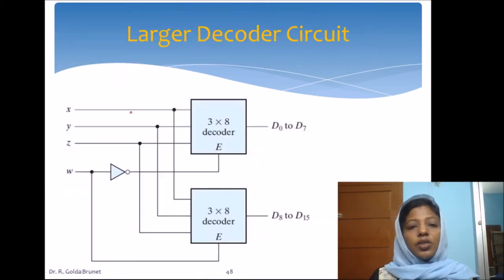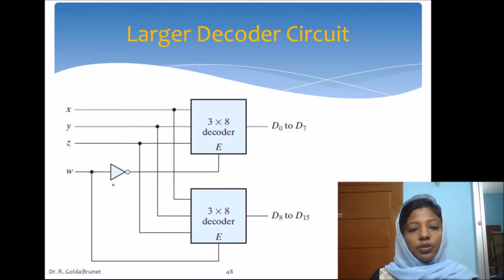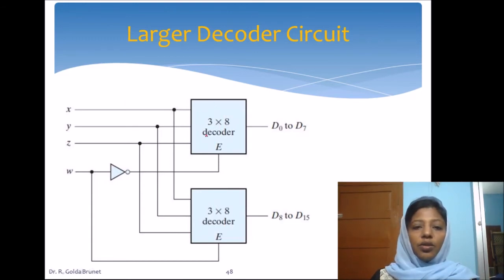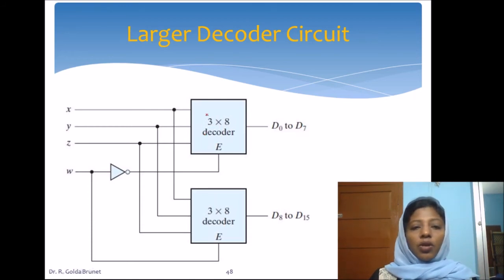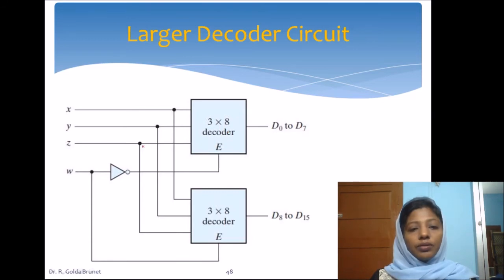There is one more advantage in using decoders with enable input. Suppose we want to build a decoder with a higher configuration that is not available in the market — then we can use a lower-configuration decoder to build a bigger one. For example, we can use a 3-to-8 decoder to build a 4-to-16 decoder.